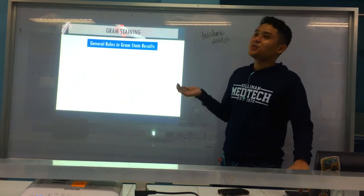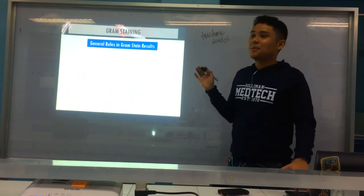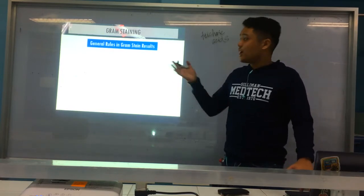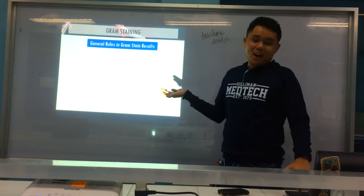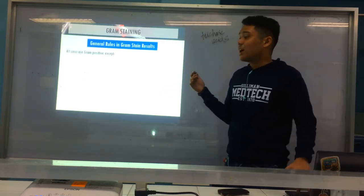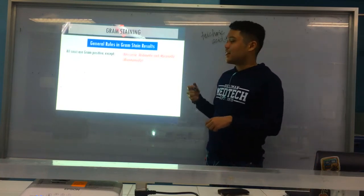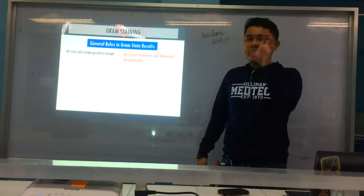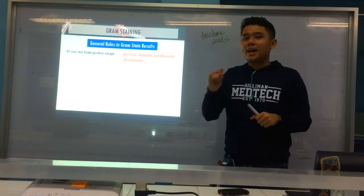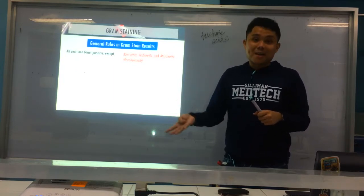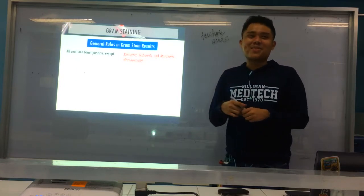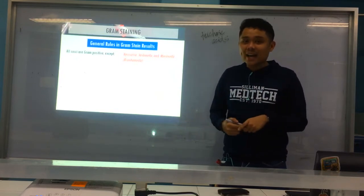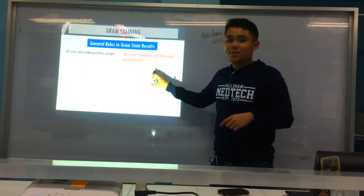Now we go to the rules — as I mentioned in intro to micro, I always emphasized: please memorize these because they will come back in bacteriology. So here, our general rules: number one — all cocci are gram-positive, except NVM: Neisseria, Valonela, and Moraxella (or Branhamella — that's the old name). Again, all cocci are gram-positive, so Streptococcus, Staphylococcus, Enterococcus, Pediococcus, Abiotrophia, Granulicatella — all cocci outside of NVM are gram-positive.